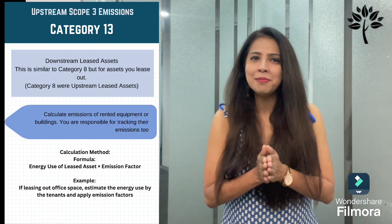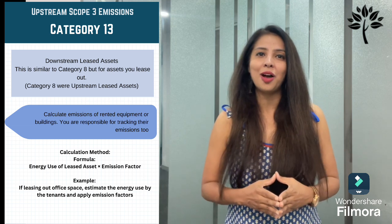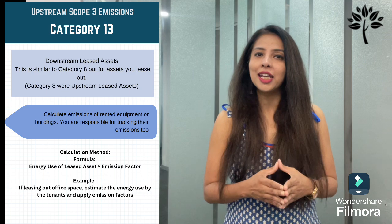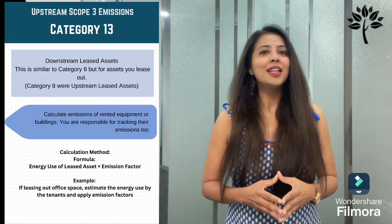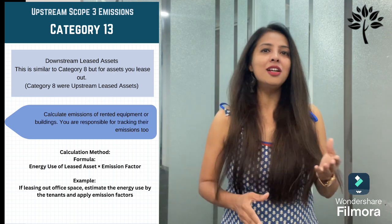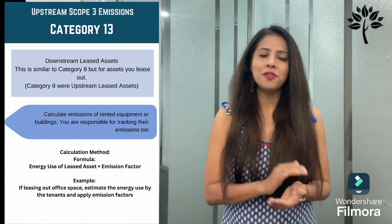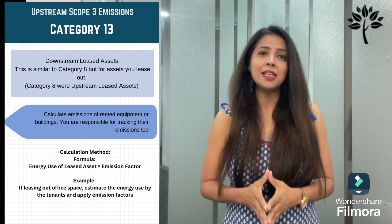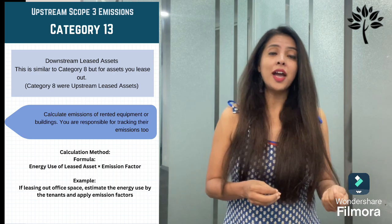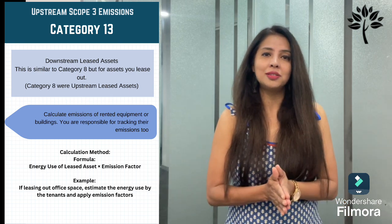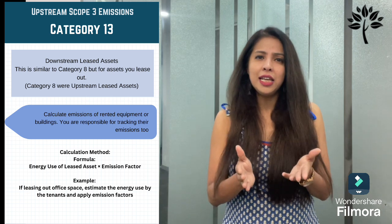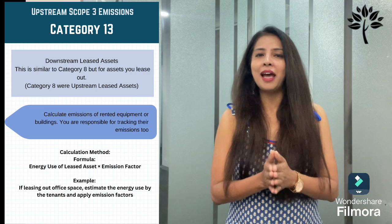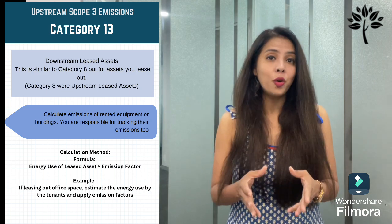Category 13 is downstream leased assets — similar to category 8 but for assets you lease out. If you are renting out equipment or a building, you are responsible for tracking their emissions too. The calculation method is: energy use of leased assets × emission factor. Activity data is leased asset energy consumption. Emission factors are based on the type of energy used. For example, if leasing out office space, estimate the energy used by the tenants and apply the emission factor.